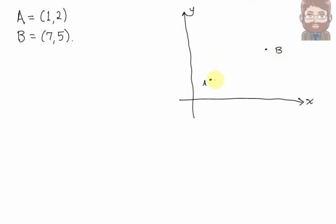So what I'm interested in now is how do you get from A to B? In other words, I'm interested in the directed line segment from A to B. Now I'm going to use angle brackets to distinguish this from a point.